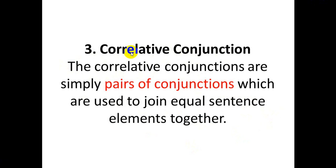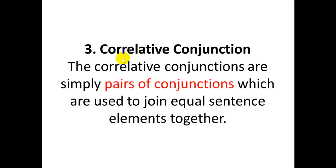The third type is correlative conjunction. 'Co' means two things relate to each other — correlative conjunctions relate two elements. These conjunctions always appear in pairs. The pairs are used to join equal sentences or grammatical units.